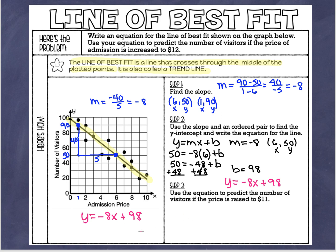Now we're going to use this equation to predict the number of visitors if the price is raised to 11 dollars. Our graph doesn't go up to 11 — we'd have to extend it — but we can just use our equation instead. Starting with y equals negative 8x plus 98, if the price is 11, that's our x value. I'll substitute 11 in place of x: y equals negative 8 times (11) plus 98.